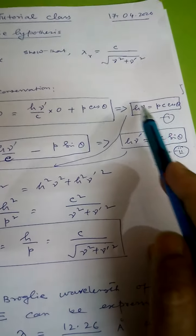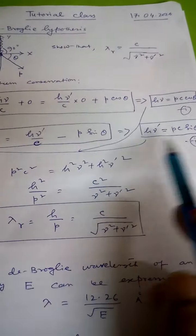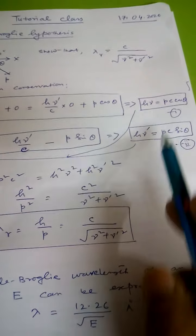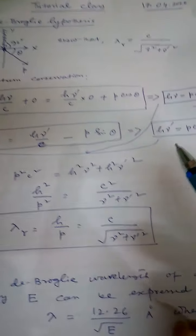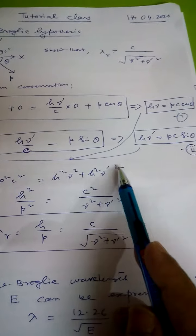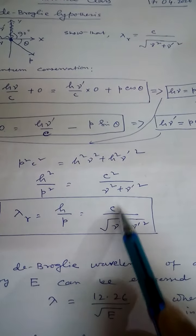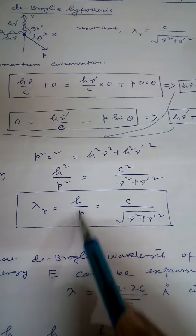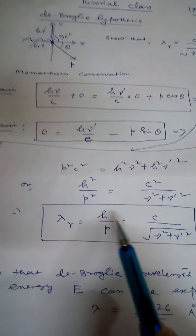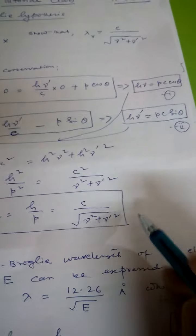From equations 1 and 2, squaring and adding: h²*nu² + h²*nu_prime² = P²c²*cos²(theta) + P²c²*sin²(theta). Since sin²(theta) + cos²(theta) = 1, this gives P²c² = h²*nu² + h²*nu_prime². After simplification, h/P = C / sqrt(nu² + nu_prime²). Since h/P is the de Broglie wavelength of the recoil electron, lambda = C / sqrt(nu² + nu_prime²). Hence, the relation is established.